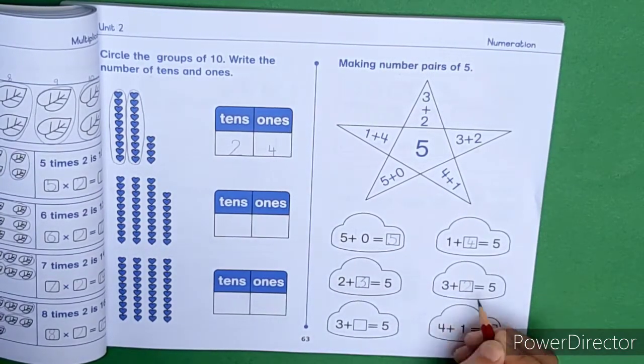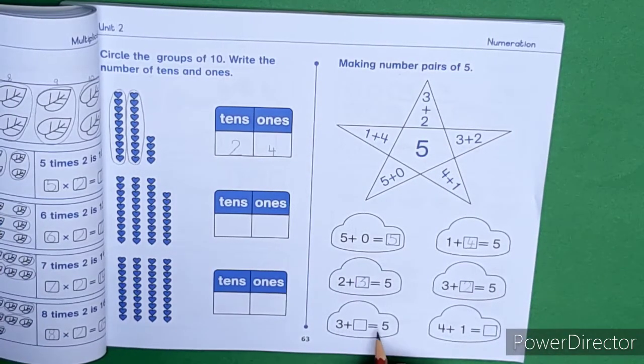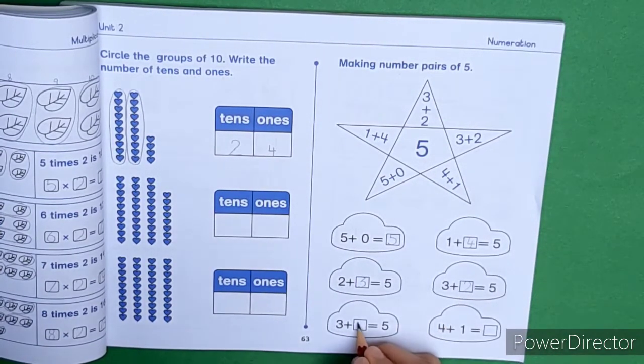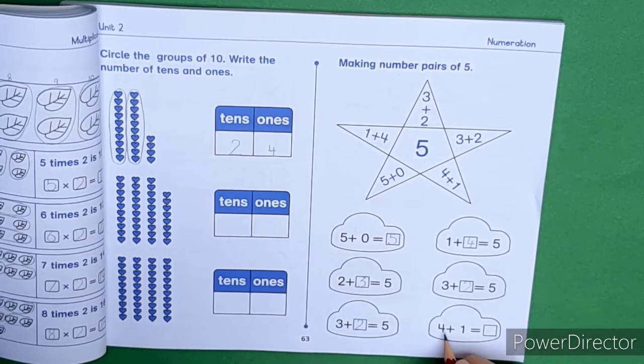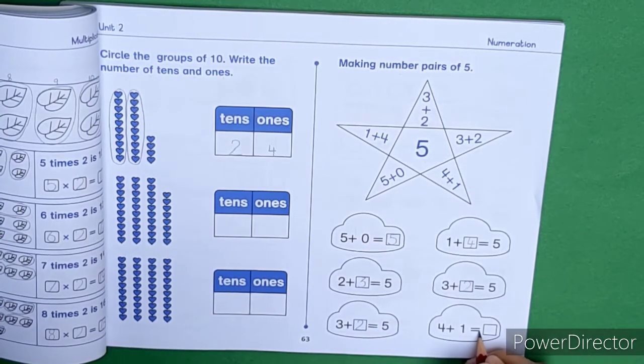3 plus dash is equal 5. 4 plus 1 is equal...4 plus 1 is equal 5.